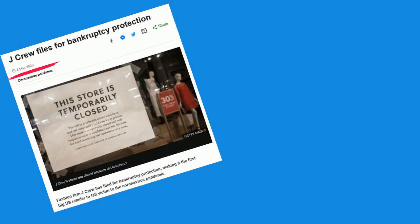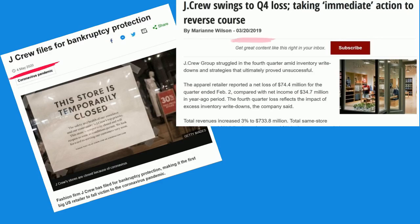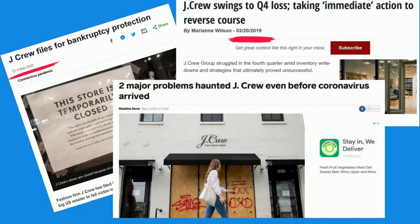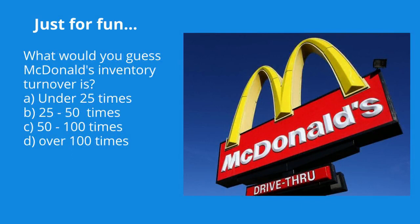J.Crew filed for bankruptcy protection in May 2020, and most people attributed it to the coronavirus pandemic. But the truth is J.Crew was in serious trouble before we even knew about the coronavirus — any good analyst could see that just using these simple ratios. What would you guess McDonald's inventory turnover is? Under 25 times, 25 to 50, 50 to 100, or over 100 times? If you guessed over 100 times, you're correct — it was 197 times in 2019.